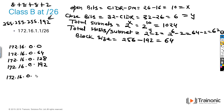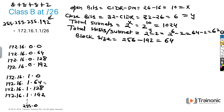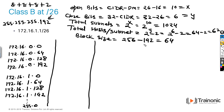Continuing: 172.16.1.0, then 172.16.1.64, then 172.16.1.192. This will go all the way through the 3rd octet values up to 255, with 4th octet values of 0, 64, 128, and 192. Now we have to check the first host, last host, and broadcast address.